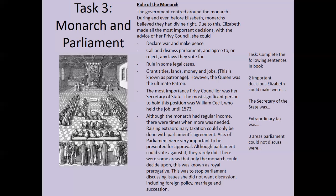Acts of parliament were very important to be presented for approval. Although parliament could vote against the queen, they rarely did. Extraordinary tax needed to be agreed by parliament, but it was very unlikely they would vote against it, mainly because the privy council was made up of loyal Protestants who recognised that the queen was the ultimate power. There were some areas only the monarch could decide upon — known as the royal prerogative — to stop parliament discussing things she didn't want discussed, including foreign policy with countries like Spain and France, marriage, and succession — who would take on her power after she died.